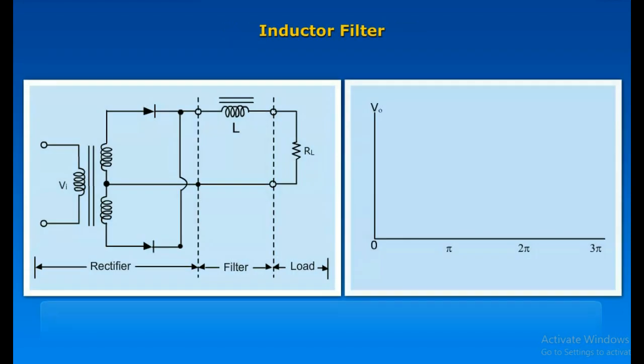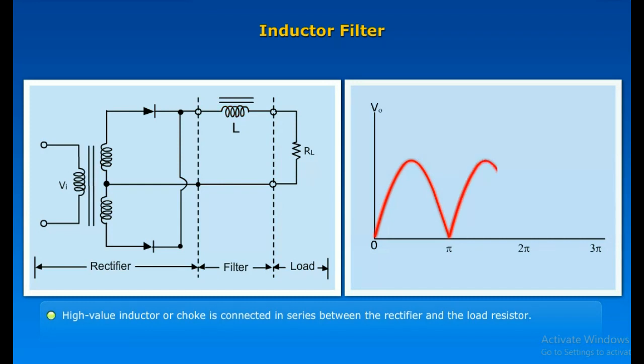Inductor filter: The reactance of the inductor is given by X_L equals omega L. Inductor filter allows AC and blocks DC signal. It is always connected in series. A high value inductor or choke is connected in series between the rectifier and the load resistor.